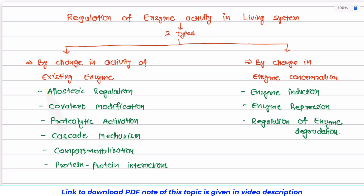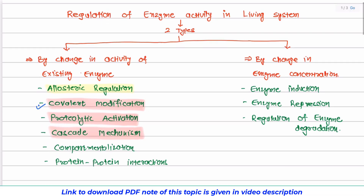In the previous video tutorial we had discussed about allosteric regulation. Now in this video tutorial I will discuss about covalent modification, proteolytic activation and cascade mechanism as a part of regulation of enzyme activity in a living system. So let's start our discussion first with the covalent modification.